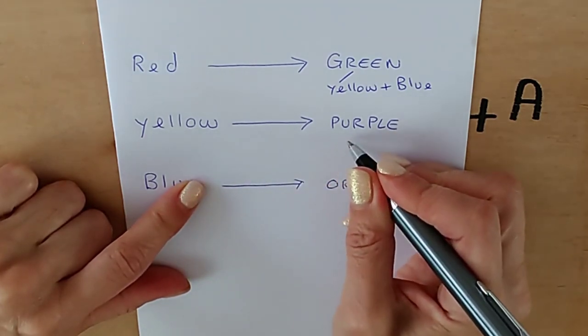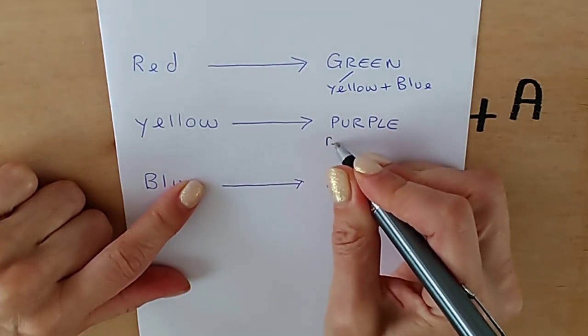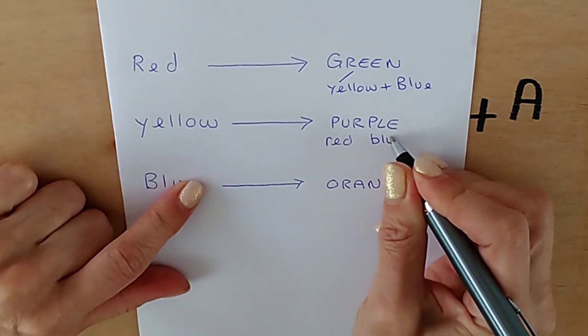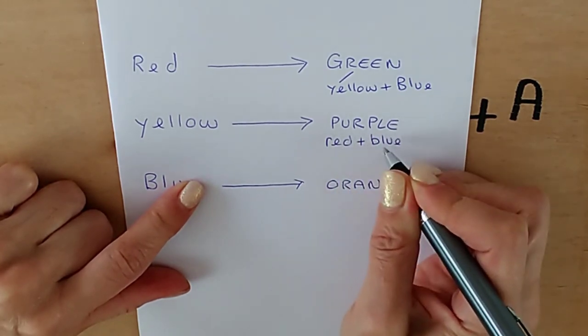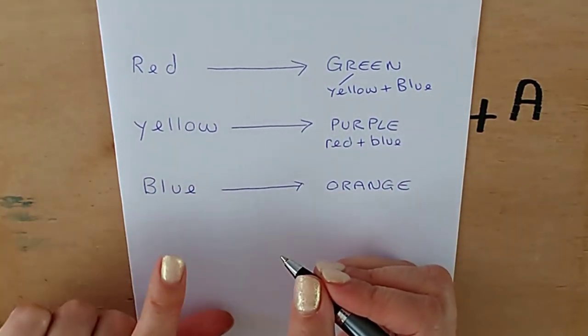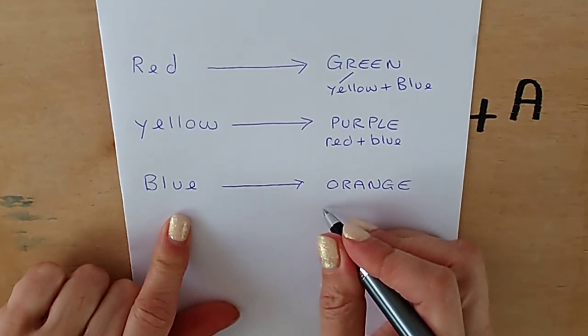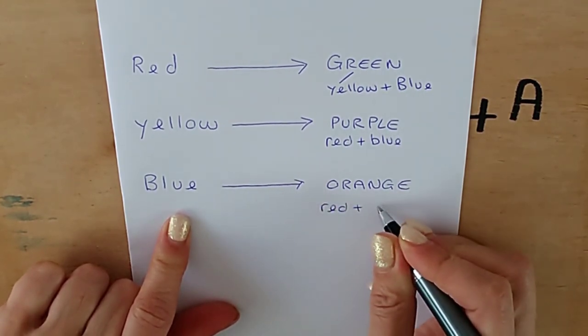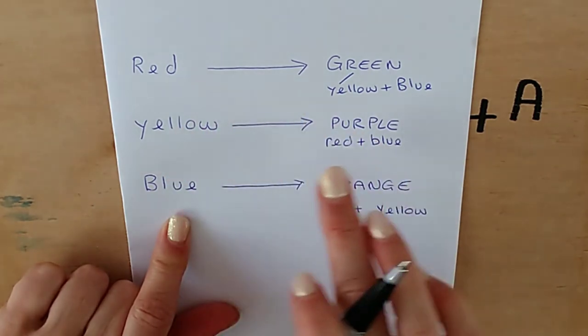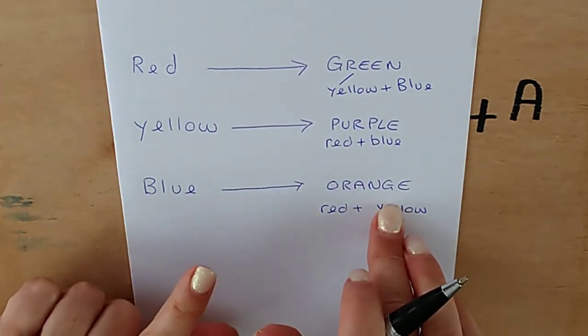So here is yellow and its opposite is purple. Purple is made from red and blue. So again, we have one, two, three primaries. Here we have blue. Its opposite is orange, which is red and yellow. So within each of these sets, we have all three of the primary colors.